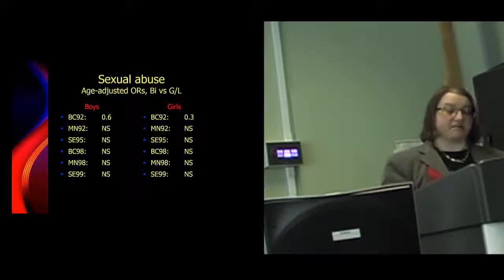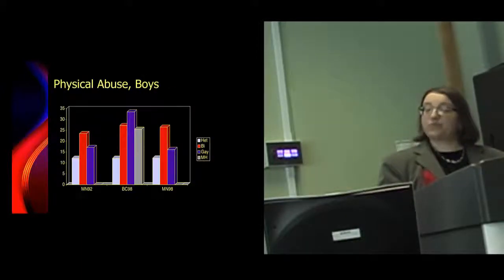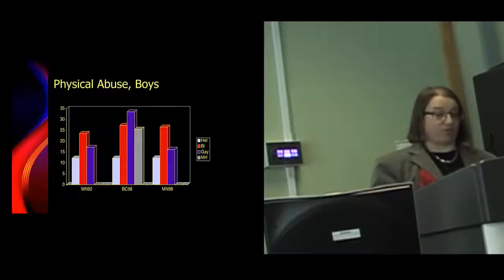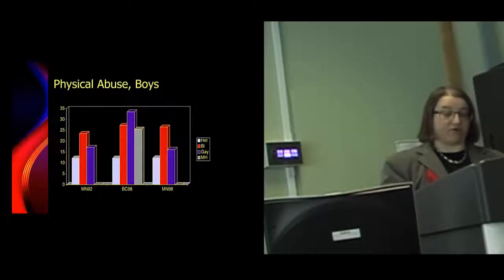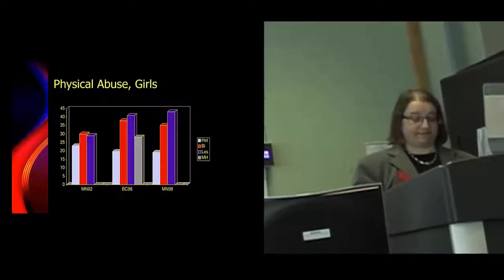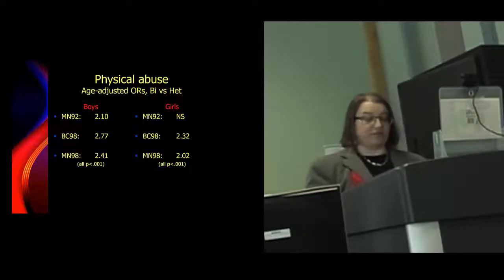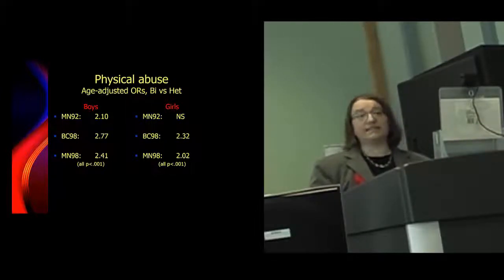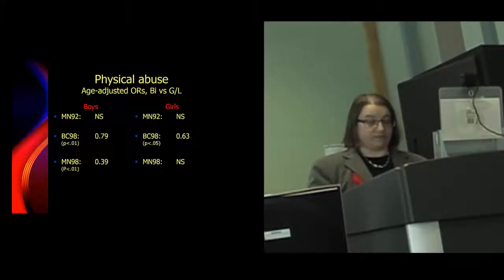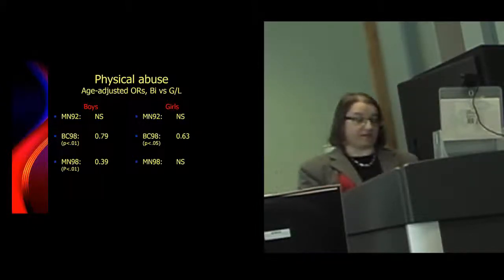Differences were generally not significant between gay, lesbian, and bisexual teens. In the three surveys that assessed physical abuse, gay and bi boys also report a higher prevalence — one-fourth to one-third reporting abuse, compared to just over 10 percent of heterosexual boys. So do lesbian and bi girls. The age-adjusted odds ratios of physical abuse show that bi teens have twice the odds of abuse compared to heterosexual teens, except for Minnesota in 1992. However, in half the surveys, gay or lesbian teens are at higher risk for physical violence than bi teens.